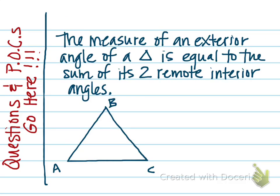This next theorem has to do with the exterior angle of a triangle. An exterior angle of a triangle is made by extending one of its sides at one of its vertices. For example, if I want to show the exterior angle at point C of this triangle, I have two choices: I could extend BC out this way, or I could extend AC out this way. You are just going to do one of those. The exterior angle we are talking about right now is this angle right here — we can call that angle 1.